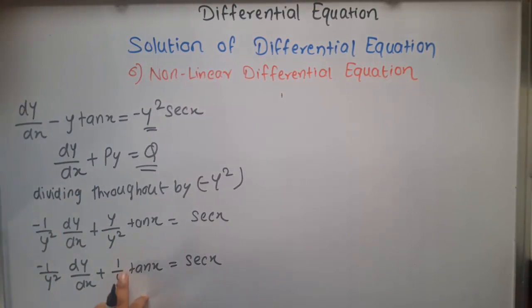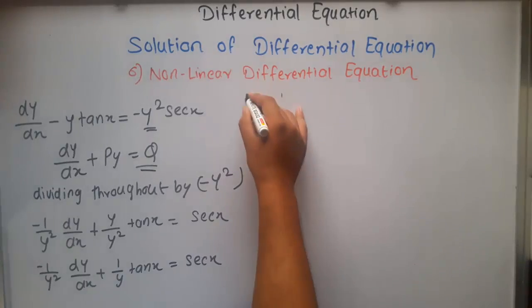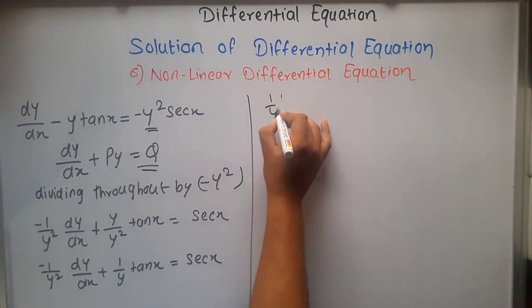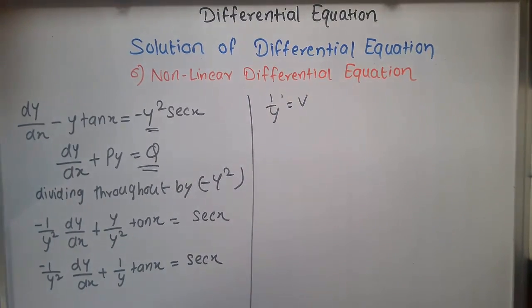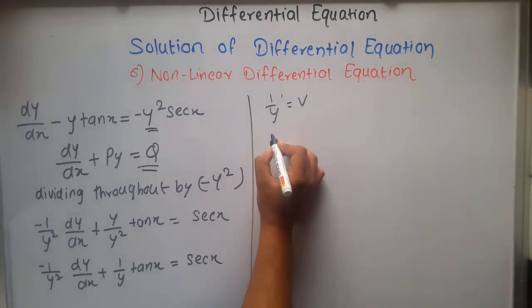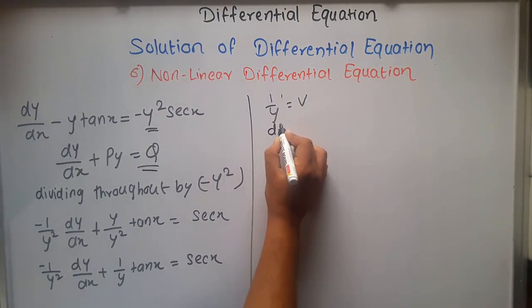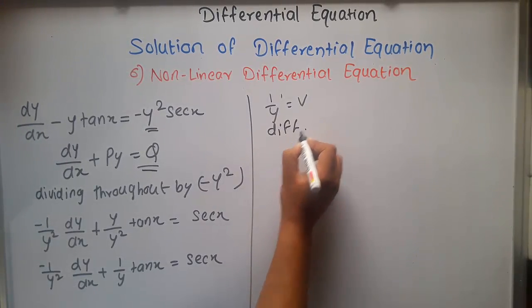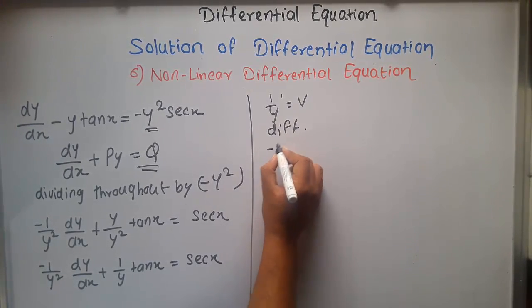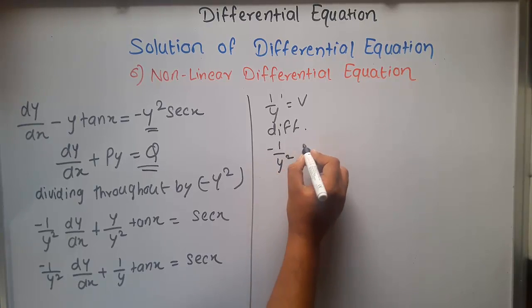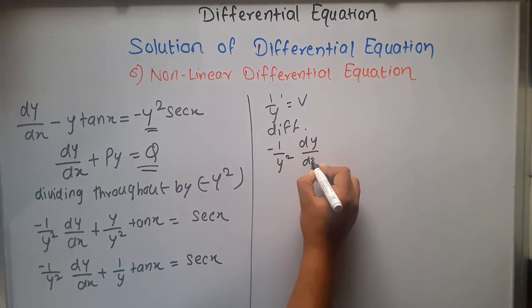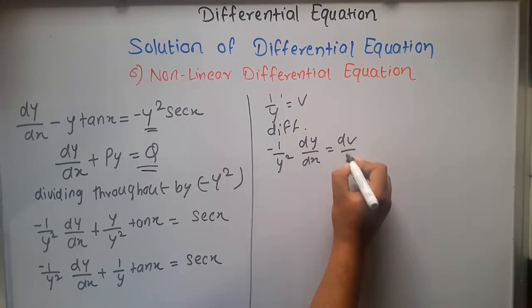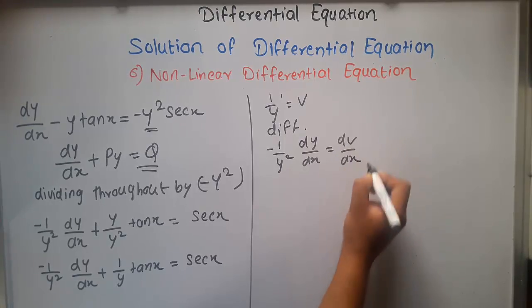We make the substitution 1/y = v. Differentiating, we get -1/y² · dy/dx = dv/dx, which matches the term already present in our equation.